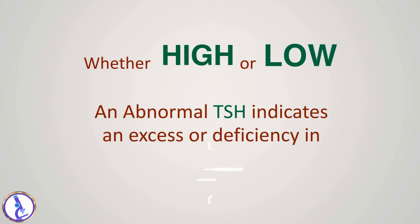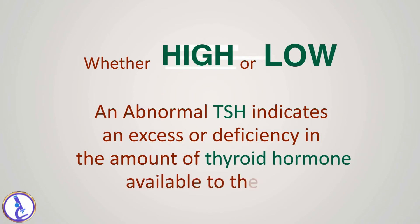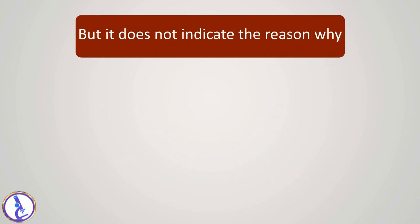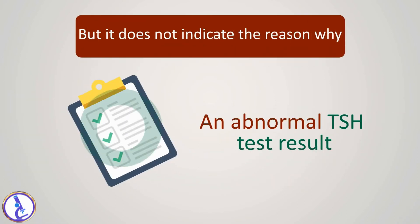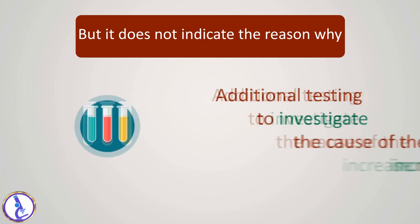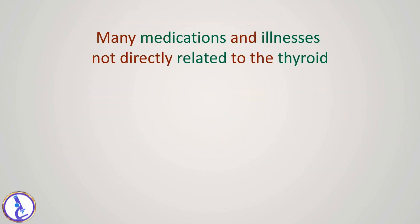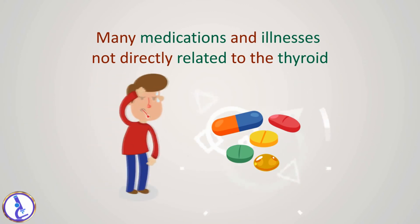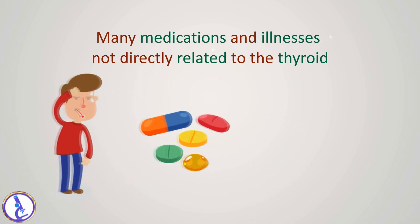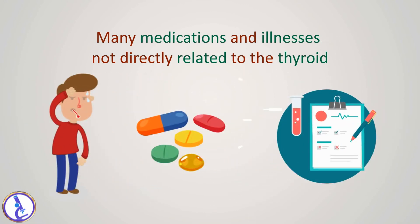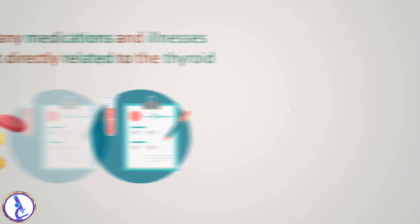Whether high or low, an abnormal TSH indicates an excess or deficiency in the amount of thyroid hormone available to the body, but it does not indicate the reason why. An abnormal TSH test result is usually followed by additional testing to investigate the cause of the increase or decrease. Many medications and illnesses not directly related to the thyroid may also affect thyroid gland function tests.